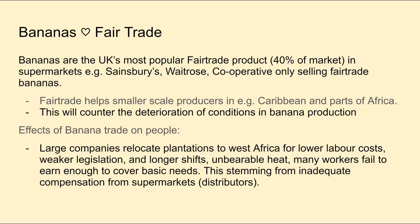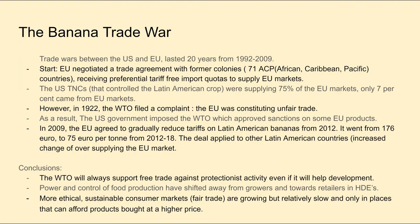The effects of the banana trade on people: large companies relocate plantations to West Africa for lower labour costs, weaker legislation, and longer shifts in unbearable heat. Many workers fail to earn enough to cover basic needs — this stems from inadequate compensation from supermarkets and distributors. The EU negotiated a trade agreement with former colonies — 71 ACP countries — receiving preferential tariff-free import quotas to supply EU markets, so they could develop independently without overseas aid.